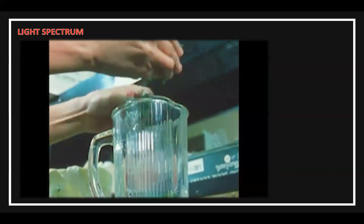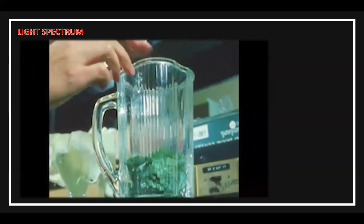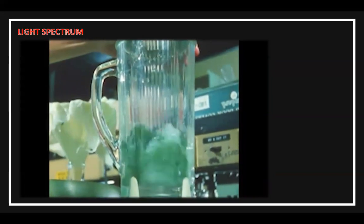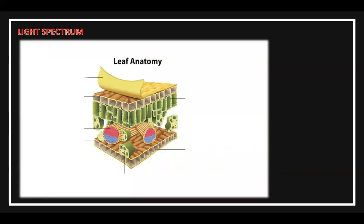Dr. Arnon first set out to prove that the entire photosynthetic process occurs in the chloroplast, and whole cells were not used in his experiments. The key thing to remember is that with this chlorophyll experiment, the plant was liquefied — it was not in its natural state. In the real world, of course, the plant has structure and acts as a whole unit.